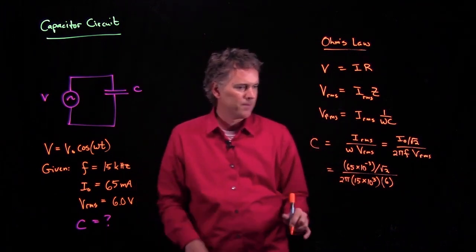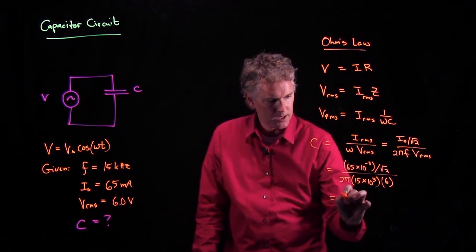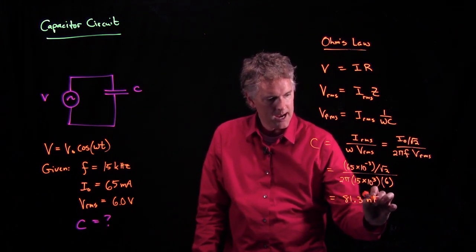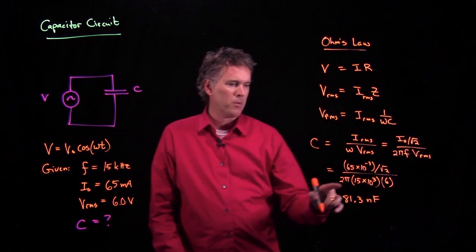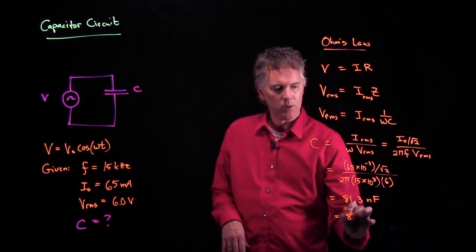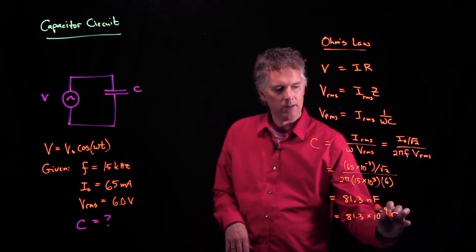So now everything is in SI units. It should work out just fine. If you punch all these numbers into your calculator, you should get something around 81.3 nanofarad. Remember, nano is 10 to the minus 9. So this is 81.3 times 10 to the minus 9 farads.